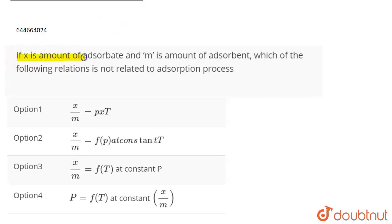The question is: if X is the amount of adsorbate and M is the amount of adsorbent, which of the following relations is not related to the adsorption process?